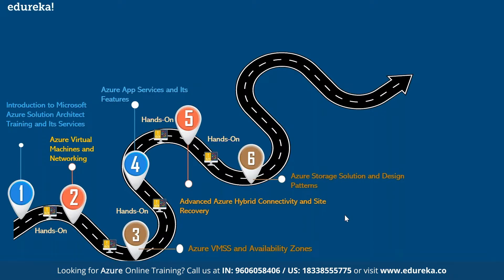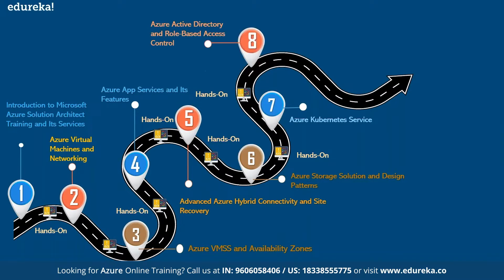In the next class you will learn about Azure storage solutions — the different types of storage like blob, file, queue, and table — understanding which one is best for what use case, with practical hands-on. In the seventh class you will learn about Azure Kubernetes Service, Docker, and the different components of Kubernetes. In the eighth class you'll learn about Azure Active Directory and role-based access control.